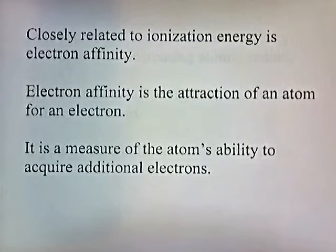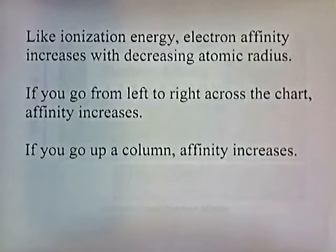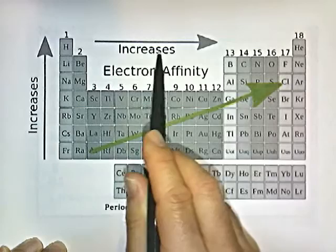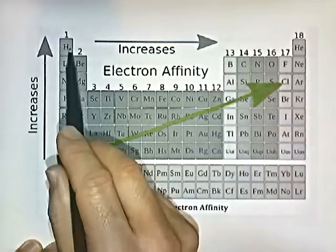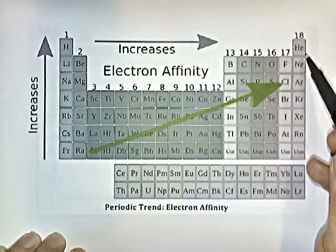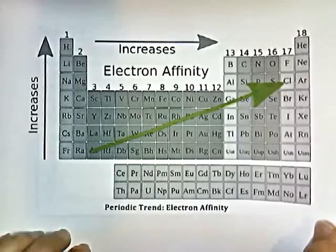Closely related to ionization energy is electron affinity. Electron affinity is the attraction of an atom for an electron — it's a measure of an atom's ability to acquire additional electrons. Like ionization energy, electron affinity increases with decreasing atomic radius. Going from left to right across the chart, affinity increases. Going up a column, affinity increases. So like ionization energy, electron affinity is inversely related to the radius — from bottom left to upper right, electron affinity increases.